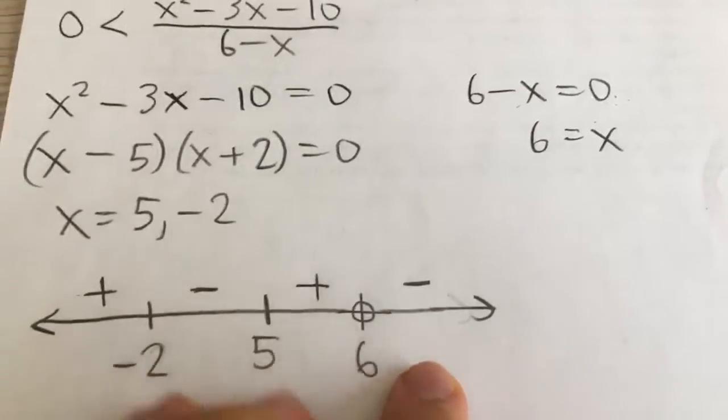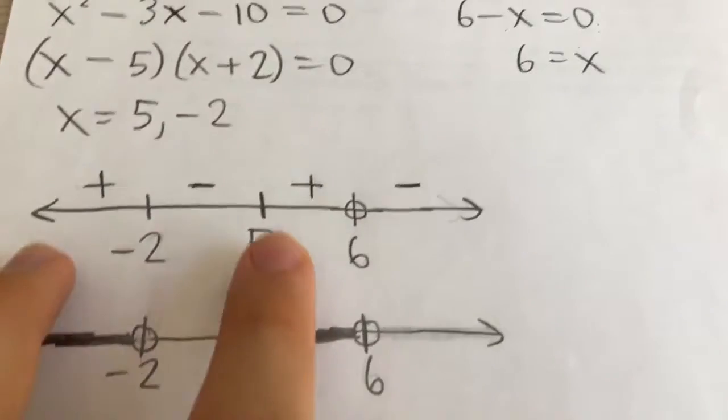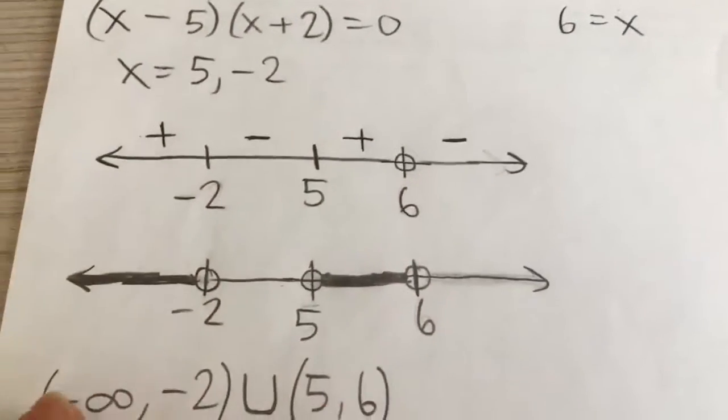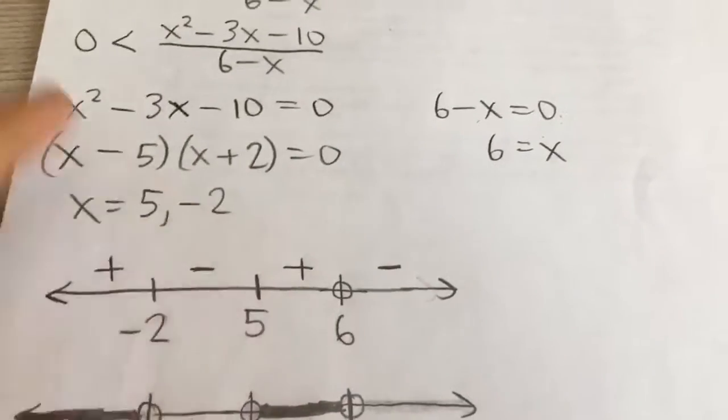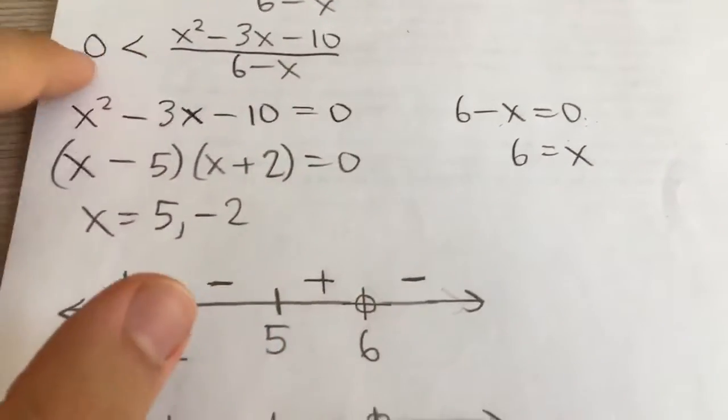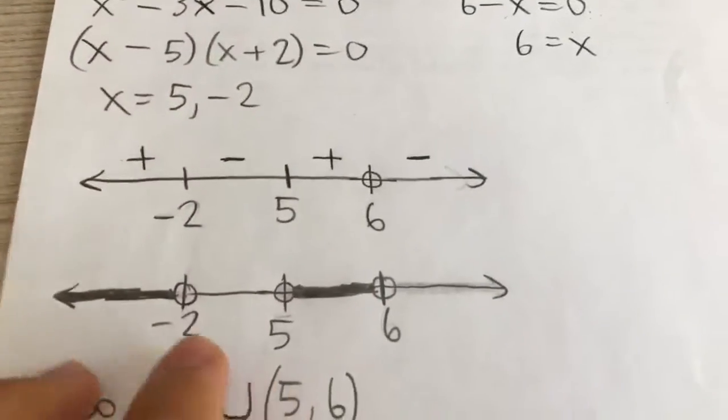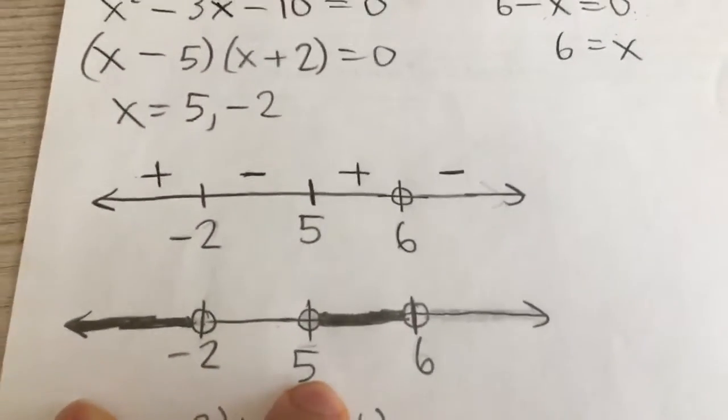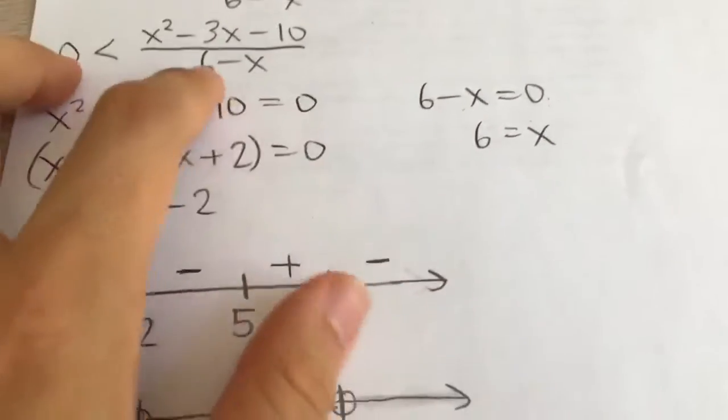And so, which regions is this fraction greater than 0? So in other words, it's in these two regions right here. And so, remember, at negative 2 and 5, those are the zeros. That's where the function or the expression is equal to 0. But we're only looking for areas where it's greater than 0. So we don't include negative 2 or 5. And we obviously don't include 6 because that is an asymptote.